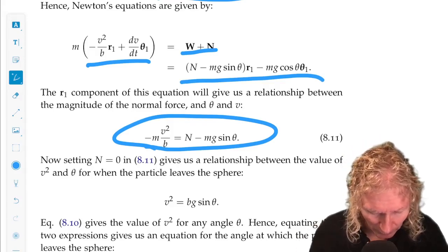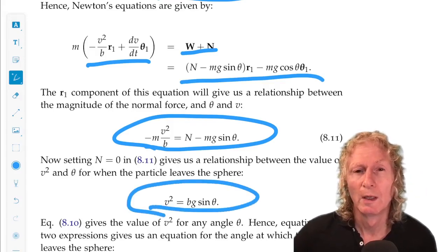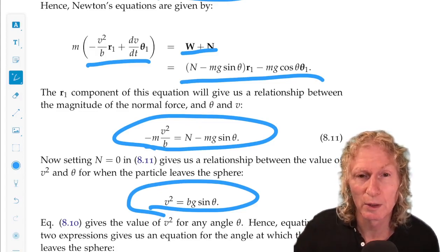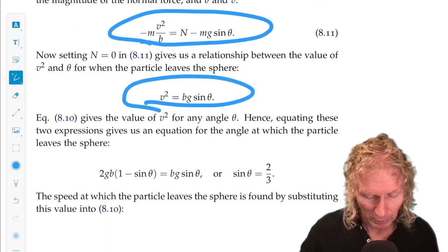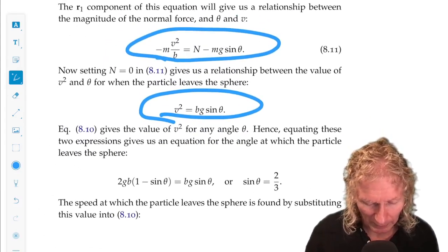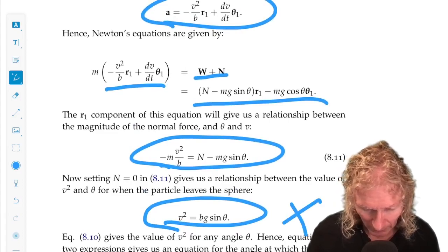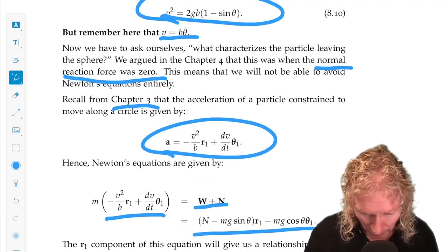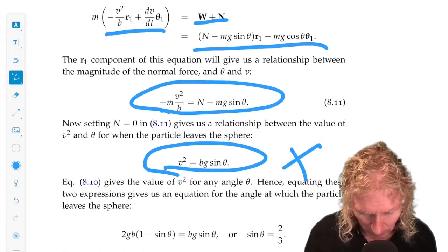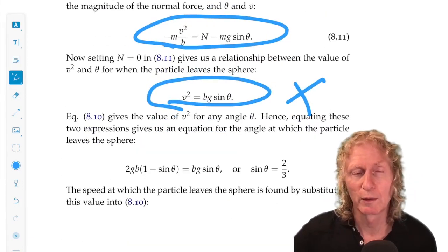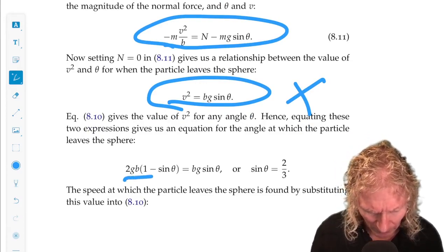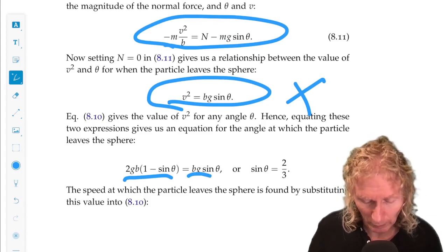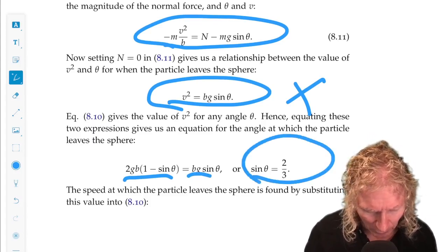Setting n equal to zero, we get v squared equals bg sin theta. This is the condition, this is the velocity for when, at the angle for when the particle leaves the sphere. If we set this equal to the general expression for the velocity as a function of the position on the sphere, that's this. This is the condition for leaving the sphere, normal force equal to zero. And we see immediately that sin theta is two-thirds.